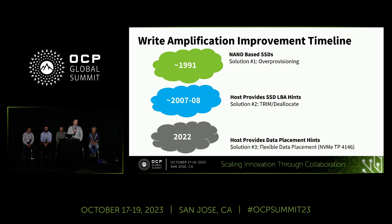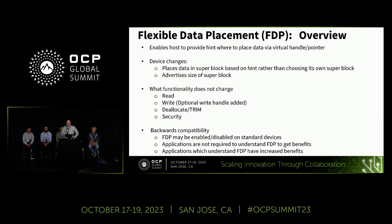Fast forward to 2007–2008, and TRIM was introduced. TRIM lets the host say it's no longer using this data, which improves things and essentially multiplies the benefit of over-provisioning. Then moving forward to FDP, the host can provide hints on what data should be placed together — basically a hint on where to place data via a virtual pointer. The device places data into a super block based on that hint and advertises the super block size to the host so it can know when it's filled one up.